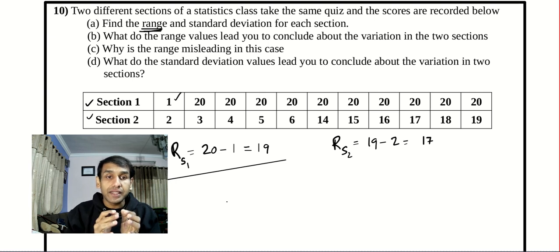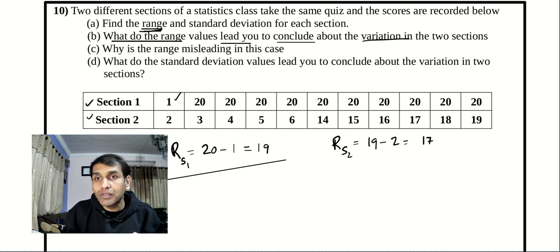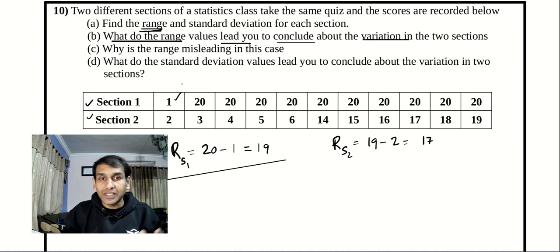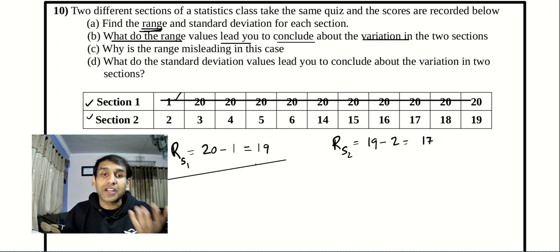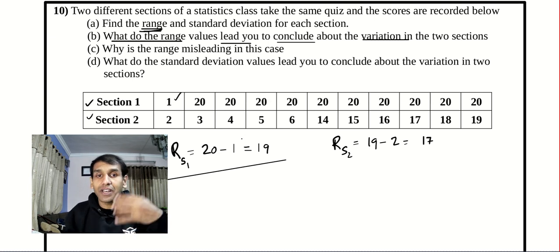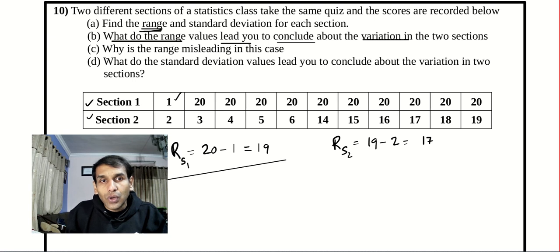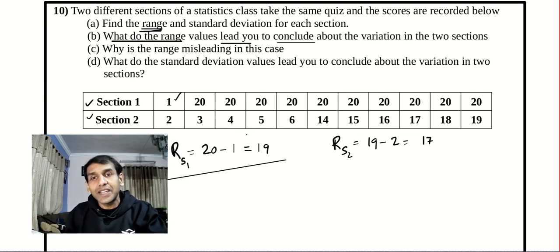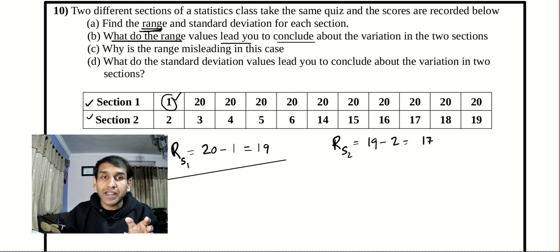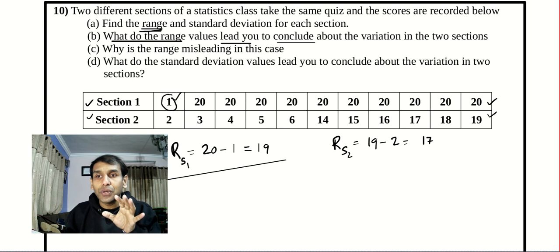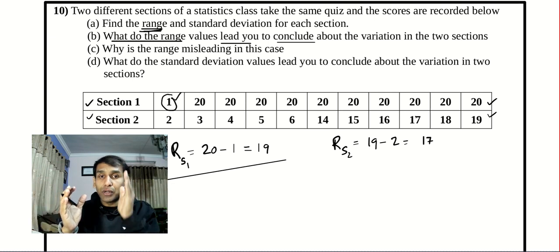If the range is bigger, then the data is spread more. What do the range values lead you to conclude about the variation? My conclusion is data from section 1 seems to be spread more. But here we have the data, so we know that most values are 20. Why is the range misleading? The range is misleading because one data value went extreme — only one data value went extreme. The second data set is actually more dispersed here and there, while the first is stable at 20, 20, 20, 20 — only one data value caused the trouble.